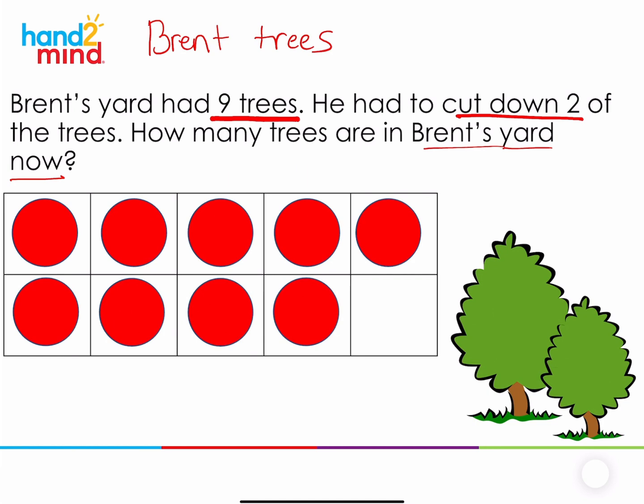And then what happened in the story? We had nine trees and then what happened? We cut down two. So two of those trees went away. To show that I'm going to cross them out. So now can you tell me how many trees Brent has in his yard now? How many did you say? Did you say seven? Yes. He has seven trees in his yard now.